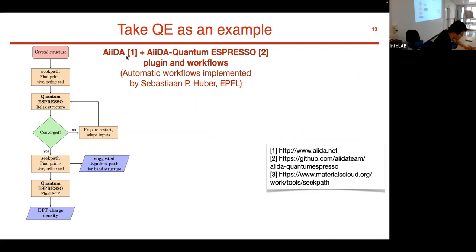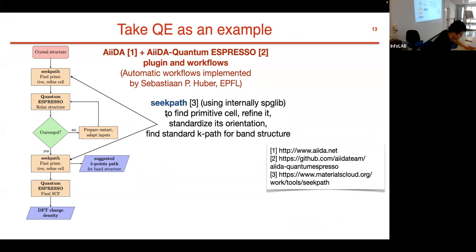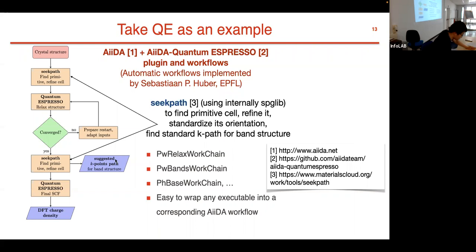Let's take Quantum ESPRESSO as an example. We have this AiiDA Quantum ESPRESSO plugin. On the left, this is a relaxation workflow. We start from a crystal structure, we run the SeeK-path. SeeK-path is a tool to reduce your conventional cell into a primitive cell and to find the standard k-path for the band structure calculation. If it is not converged, we can adapt its input and prepare restart. If it is converged, we run another SeeK-path to find the primitive cell and also generate the band structure k-point path. Finally, we run the self-consistent calculation to get the self-consistent charge density. This is all implemented in a PwRelax WorkChain in the AiiDA Quantum ESPRESSO plugin. We also have this PwBands WorkChain to automatically calculate the band structure and also the PhBase WorkChain to calculate phonon properties.